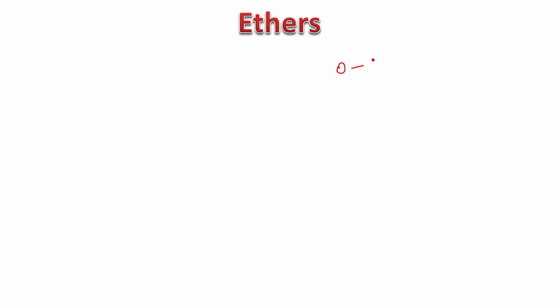Ethers are oxygen bonded to two carbon atoms. On one side you have one alkyl group, and on the other side you have another alkyl group. Basically, there are two organic groups at the two ends having carbon atoms attached to oxygen. These are ethers.